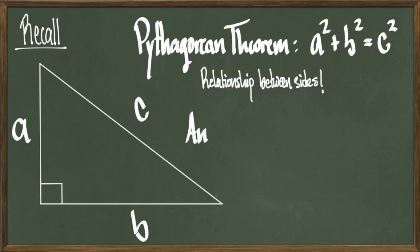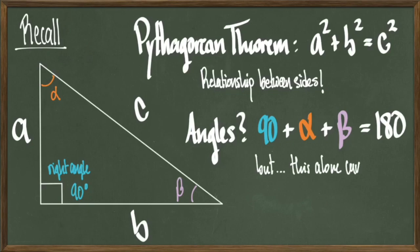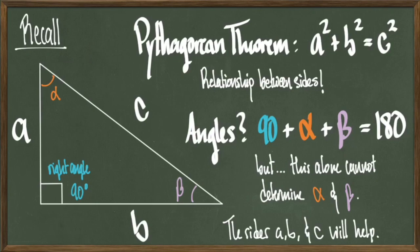But if we have this relationship between sides, what can we say about the angles? Well it's a right triangle so we know that we have a right angle, but we have these other unknown angles that we can call alpha and beta. All we really know about the angles is that they sum to 180 degrees, and this alone is not enough to determine anything about alpha or beta.